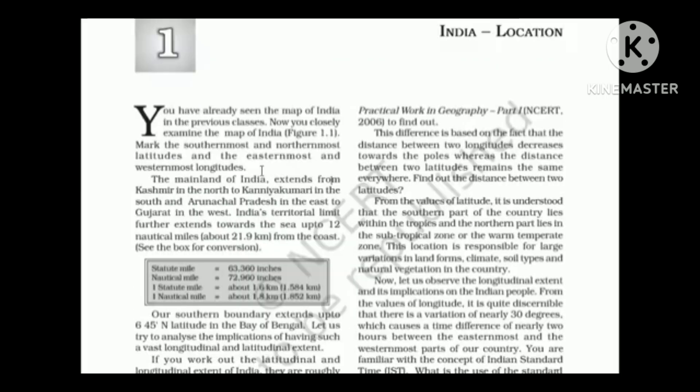In this chapter we will read about the stretch of India. As you can see the mainland of India extends from Kashmir to Kanyakumari in south and then from east to west it's Arunachal Pradesh and Gujarat.